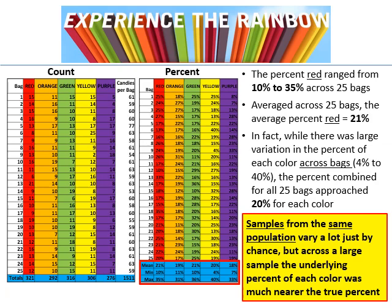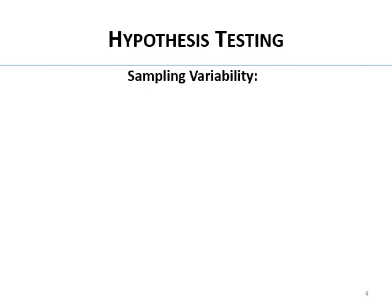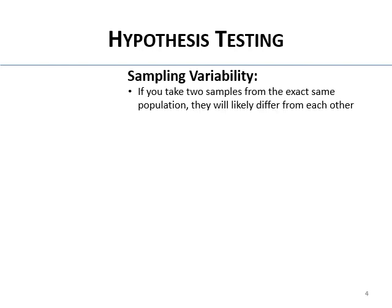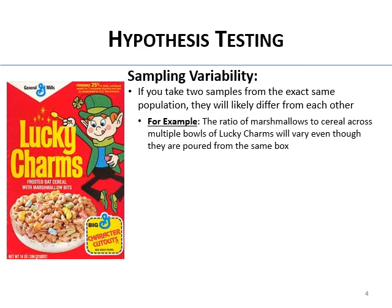A little bit more on sampling variability: if you take two samples from the exact same population they're going to differ from each other almost certainly. From the same population you pick a random sample and it's going to vary from the whole population distribution — that's just chance. For example, I grew up in a household with four people and we had Lucky Charms, and the percentage of those freeze-dried marshmallow things could vary a lot from bowl to bowl.